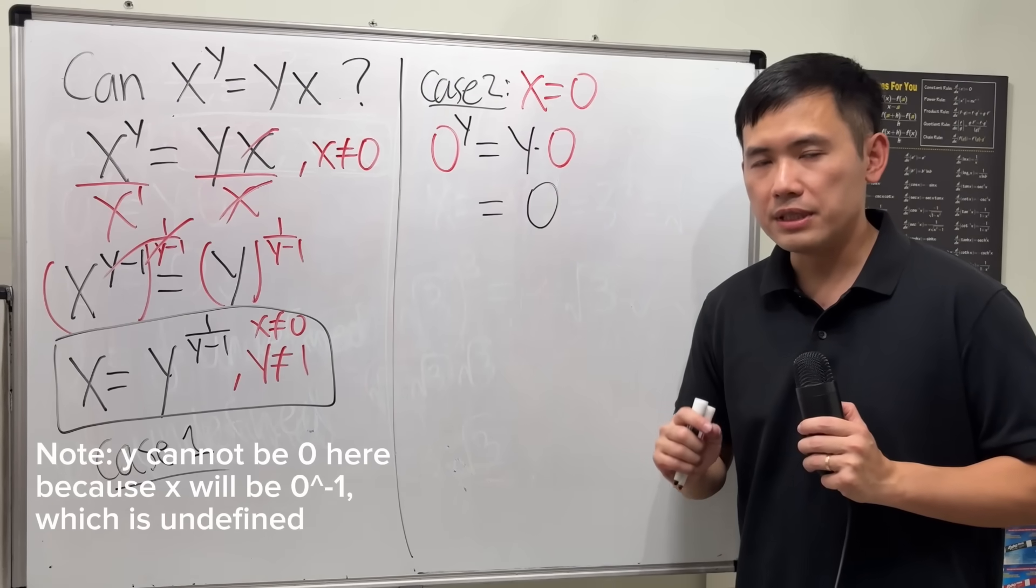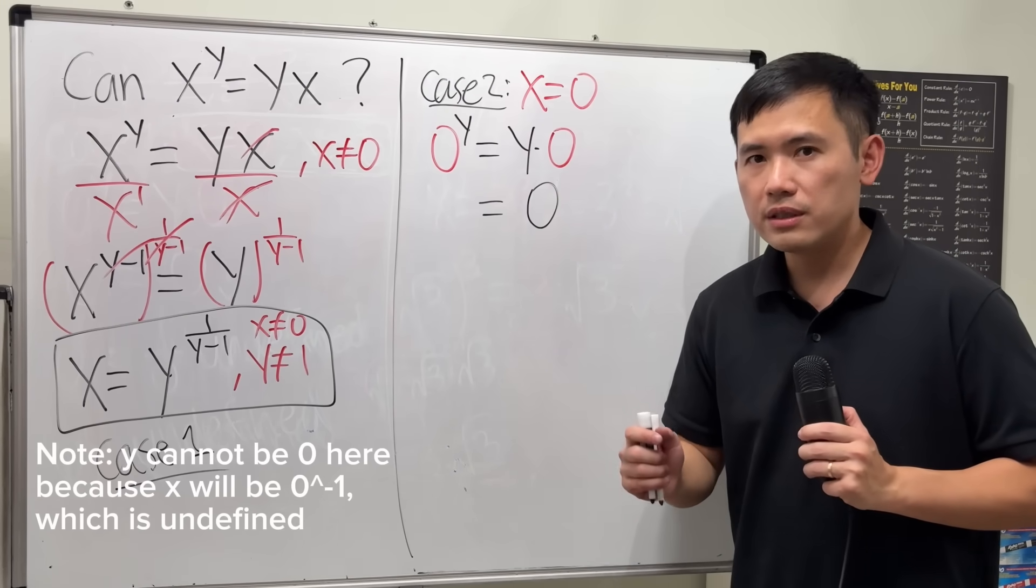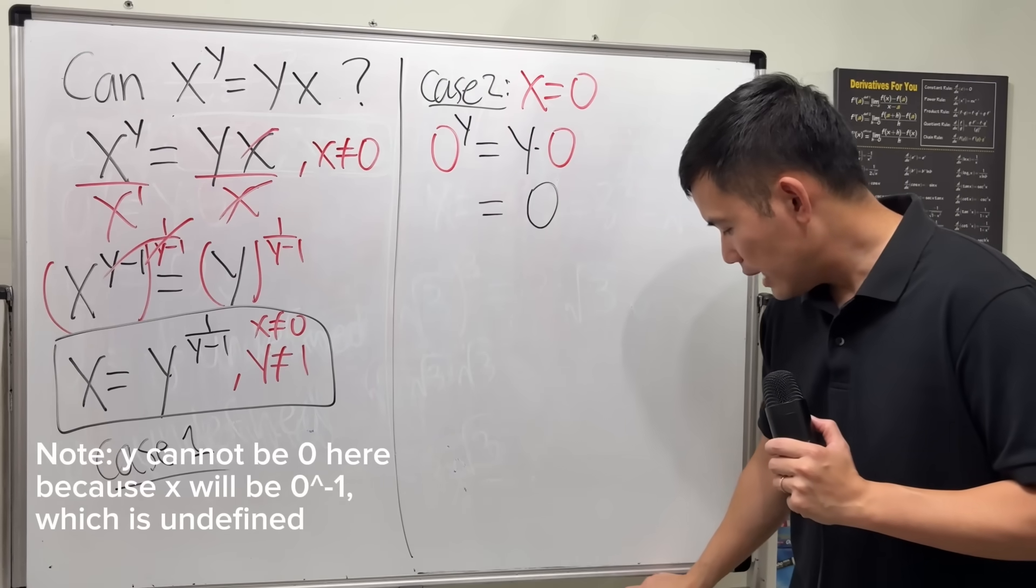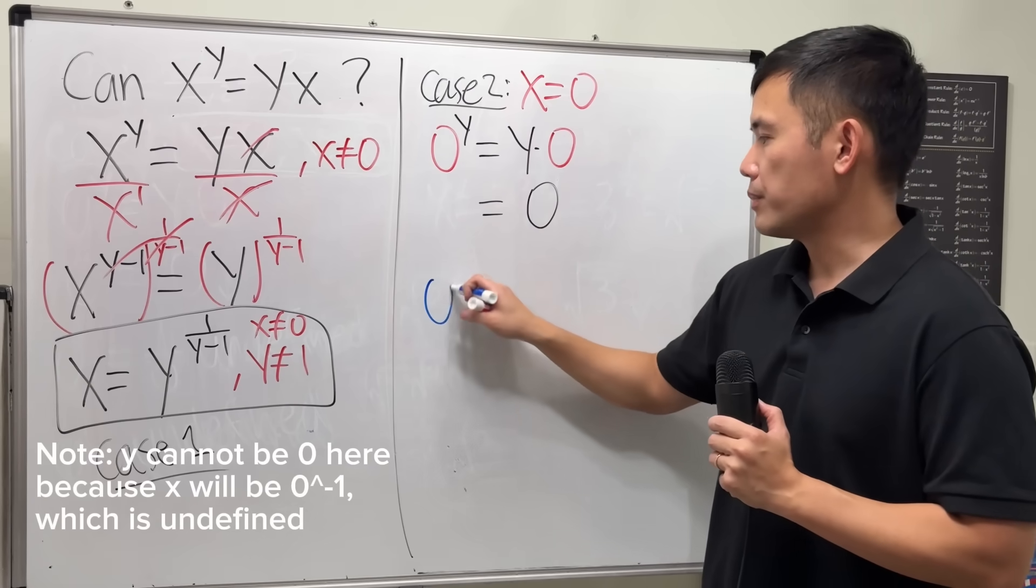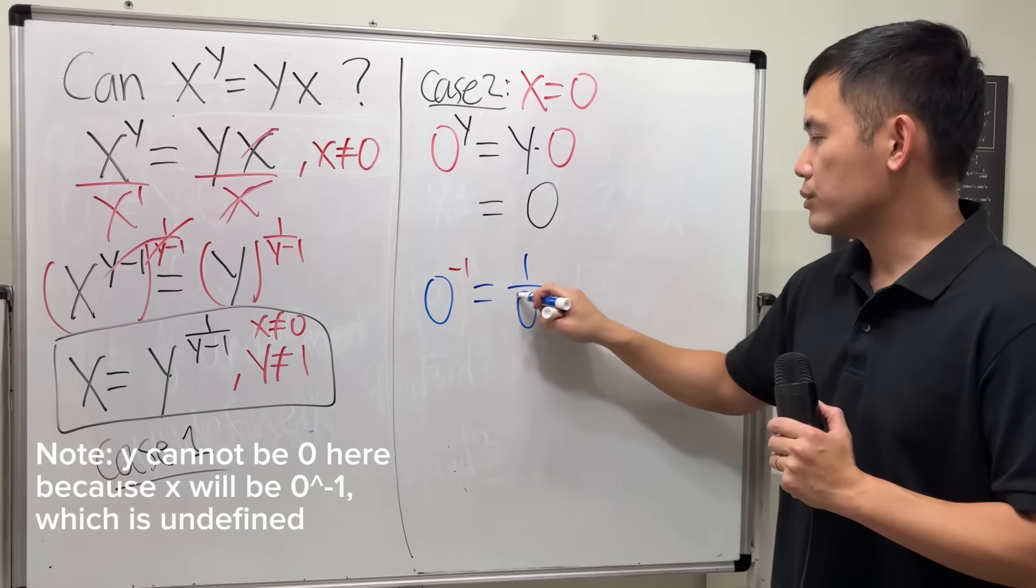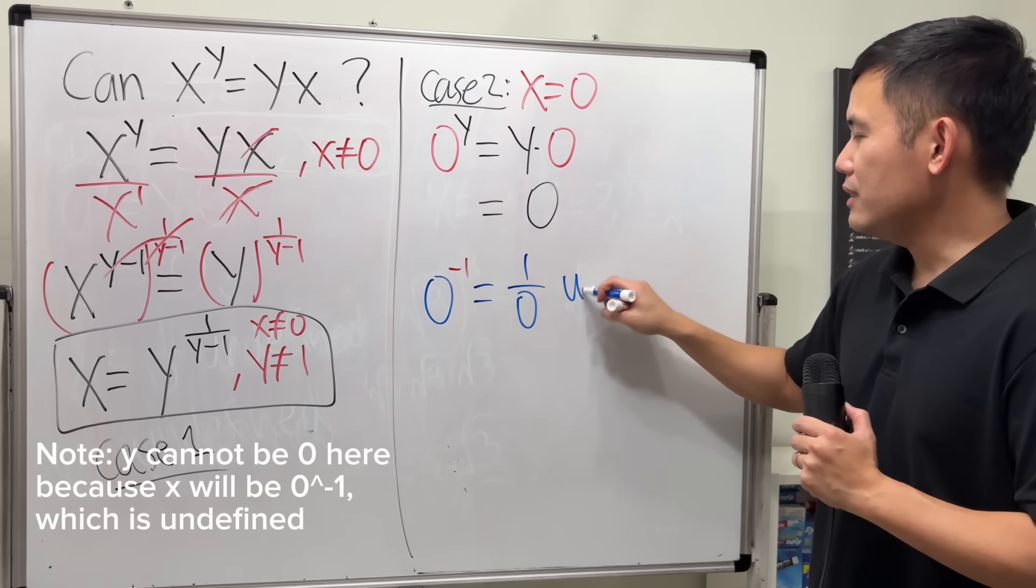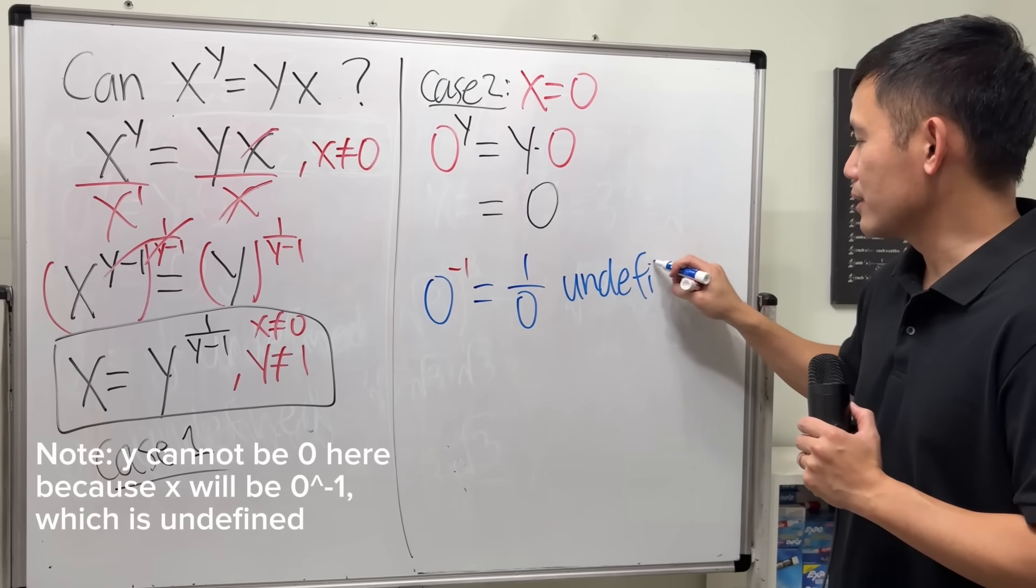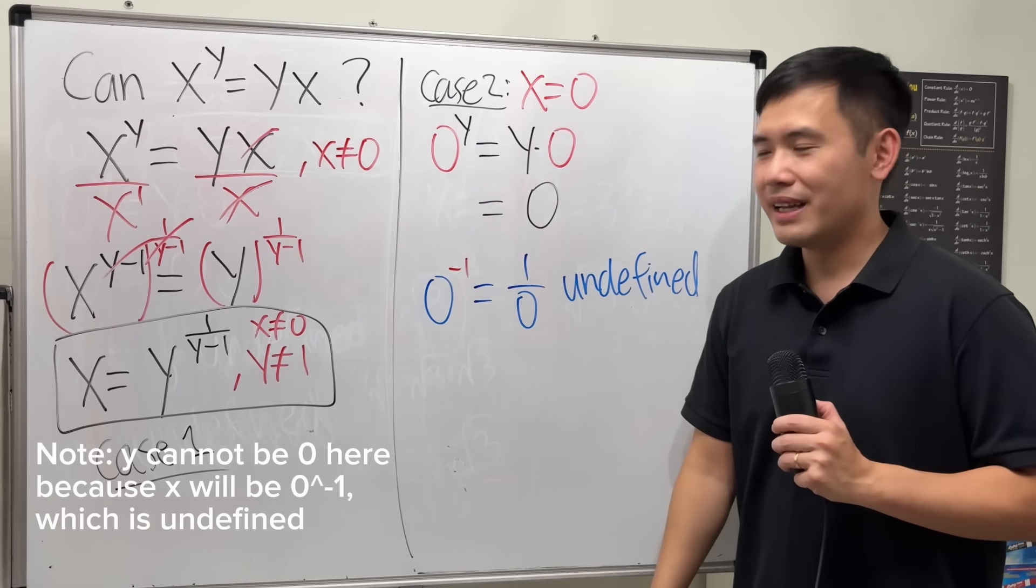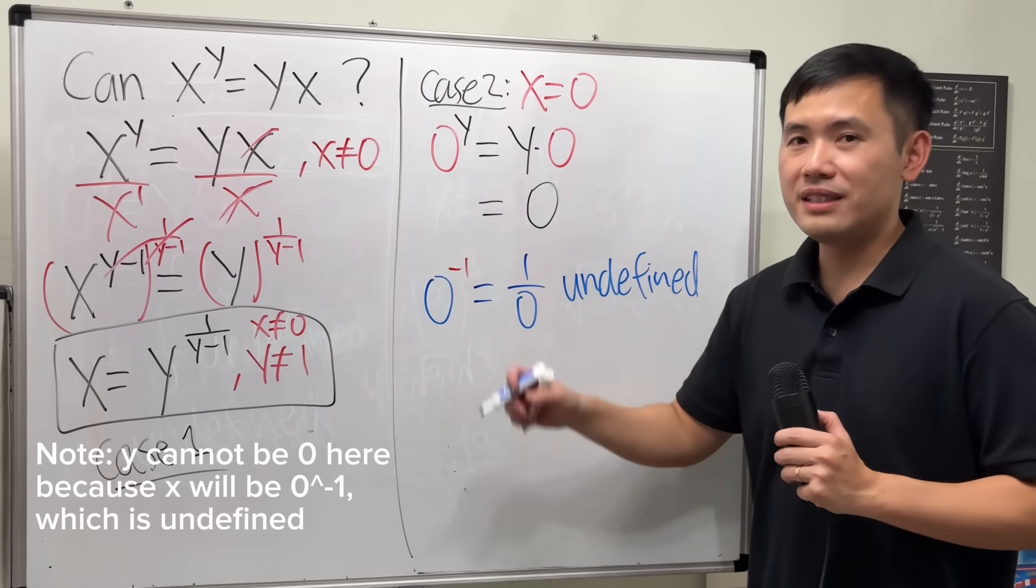There are conditions. For one, y cannot be negative. Because otherwise, it's undefined. For example, 0 to the negative 1 power. That is what? 1 over 0. That is undefined. We cannot have 0 on the bottom. So, cannot have 0 for y, cannot have negative number for y.